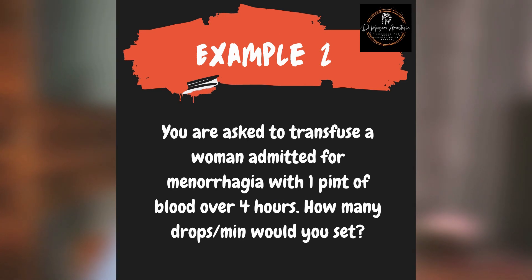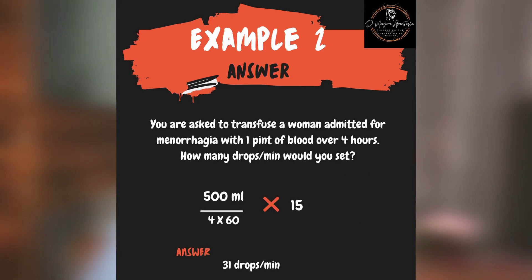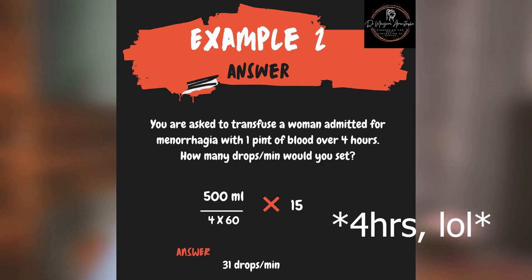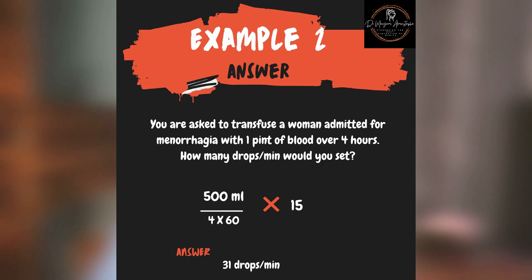You are asked to transfuse a woman admitted for the management of menorrhagia with one pint of whole blood over four hours. How many drops per minute would you set? Since we're given one pint of blood, which is about 500 mls over four hours, that translates to 500 mls over 4 times 60, multiplied by 15, which gives us about 31 drops per minute.